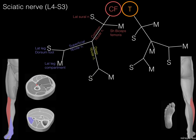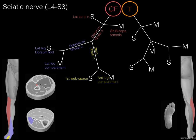The other branch is the deep fibular nerve, or deep peroneal nerve. Its sensory distribution is simply the first web space between the great and second toe. Its motor distribution is the muscles of the anterior leg compartment: tibialis anterior, extensor hallucis longus, extensor digitorum longus. There's your common fibular nerve.